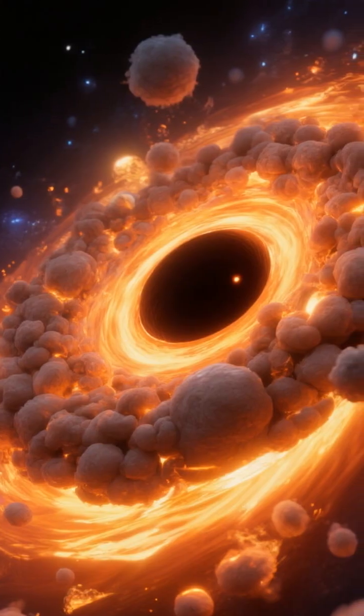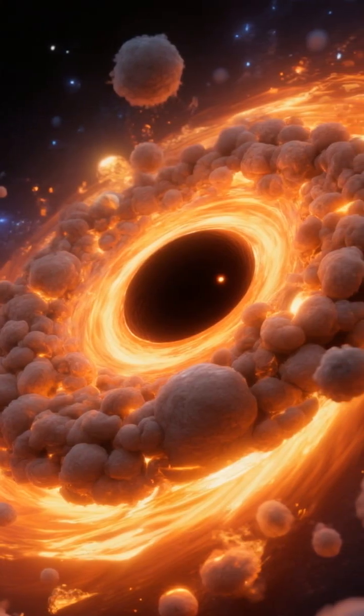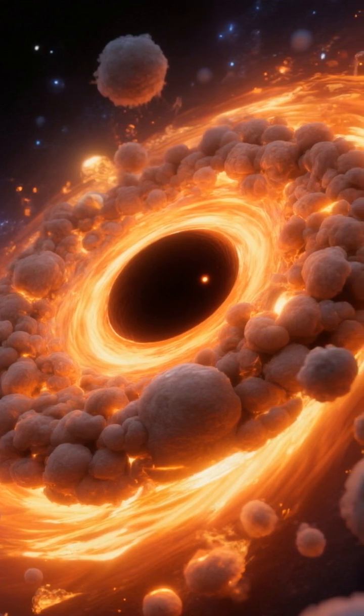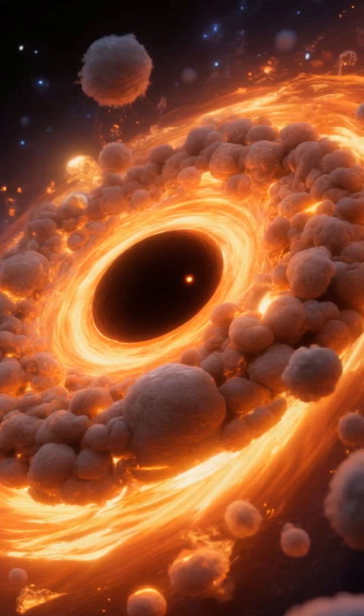What can be seen if light can't escape? Matter falling in forms a blazing accretion disk, heating to millions of degrees and emitting x-rays.